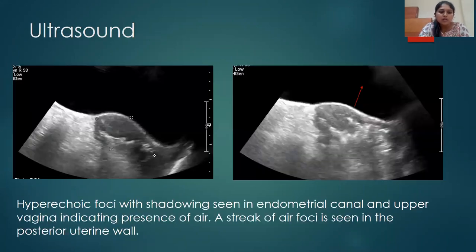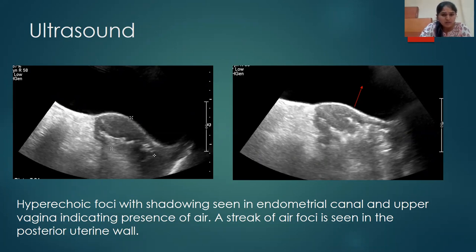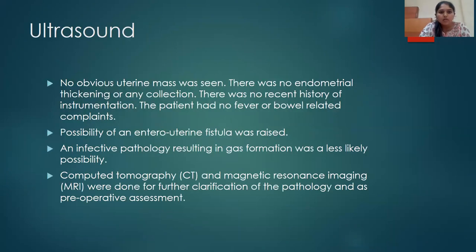What we could see were hyperechoic foci with shadowing filling the endometrial cavity. It could be air, and there was air in the endometrial cavity as well as the upper vagina. We could also see a suspicious streak of hyperechoic foci, which could be air, in the posterior uterine wall as well. So we were thinking about what could cause this.